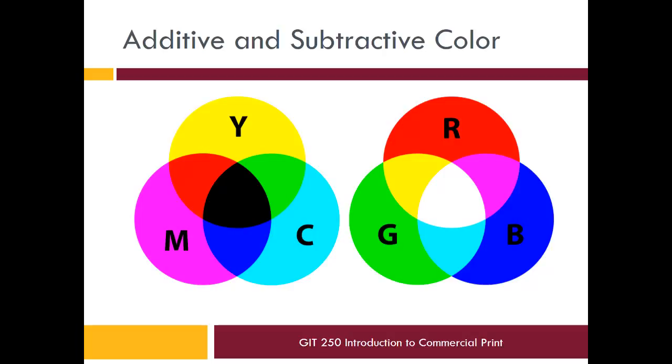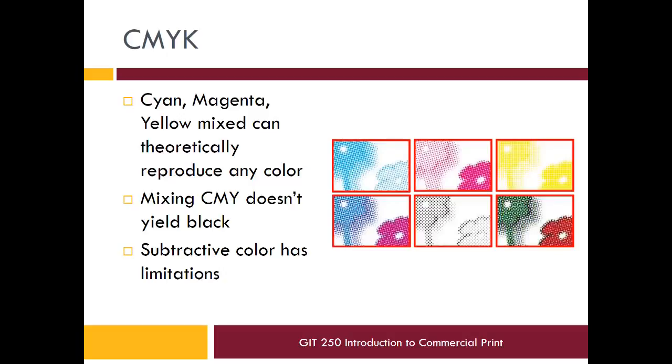Talking about printed color, the way that we print is not mixing paints like we did in kindergarten. We don't mix inks to create specific colors in printed documents. Instead we make tiny little dots of distinct colors like cyan, magenta, and yellow. When they're small enough and close enough together, our eyes and brains can't distinguish between them, so what we see is the blend of the light being reflected off of that color.